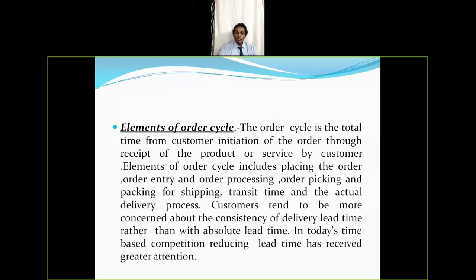The third transaction element is elements of the order cycle. The order cycle is the total time from the customer initiating an order through receipt of the product or service. It includes placing the order, order entry and processing, order picking and packing for shipping, transit time, and the actual delivery. Customers tend to be more concerned about consistency of delivery lead time rather than the absolute lead time. Lead time is the time from when the customer places an order until they receive it, and consistency must be maintained throughout.